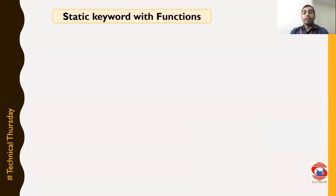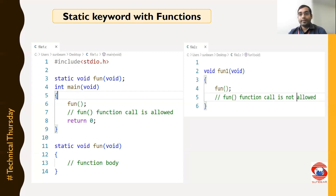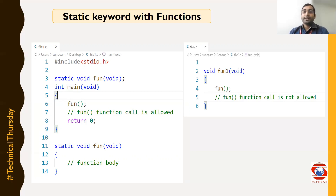Now let us understand when we use the static keyword with a function and how it affects. When we make any function static, that function can be called within that same file only — we cannot call that function in another file. That's why the scope of the static keyword is limited to the block and it is limited to the file.